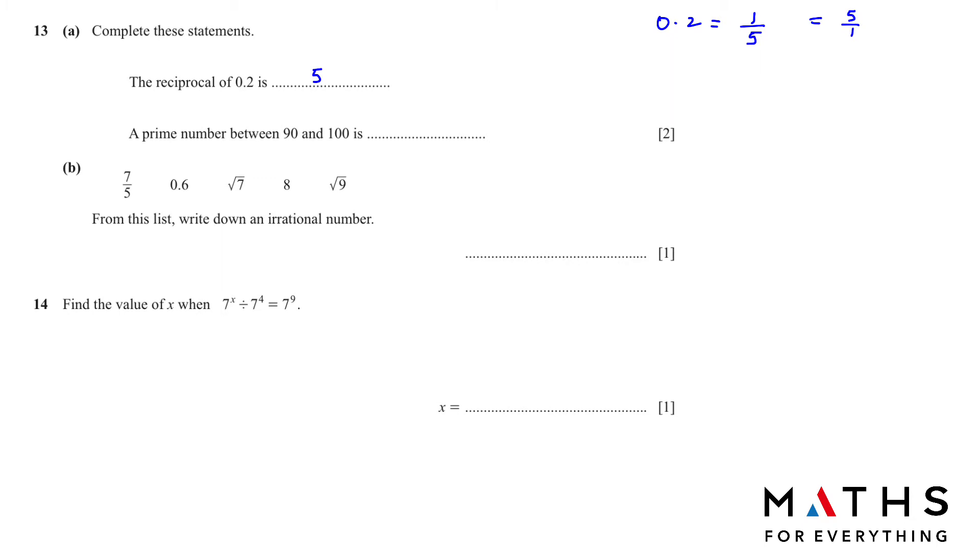A prime number between 90 and 100 is... A prime number is a number which is not divisible by any number except 1 and itself, and that is 97.